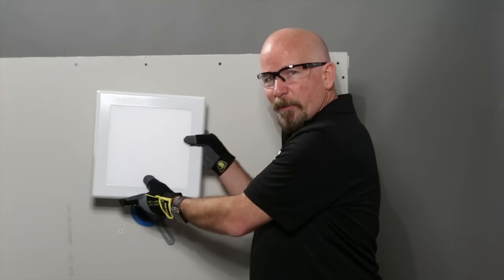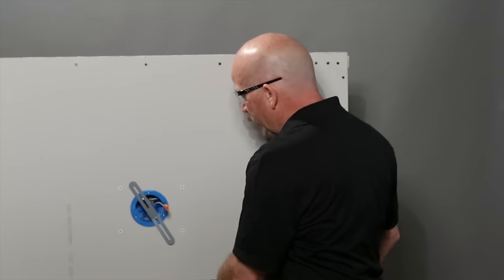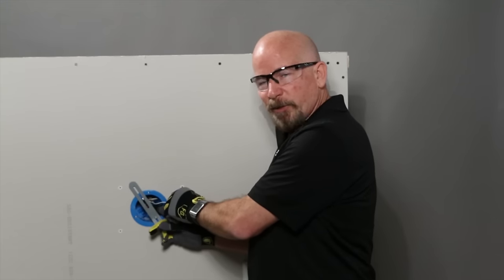This is the square one that we are going to be showing you how to install. First thing, it comes with a pigtail. You install that black wire to black wire and white to white.